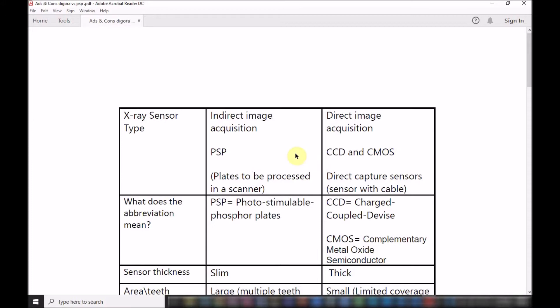While the direct, the CCD and the CMOS, there is a direct connection of a cable between the sensor and the computer. The image is directly displayed on a computer monitor after being captured. That's why we call it direct.